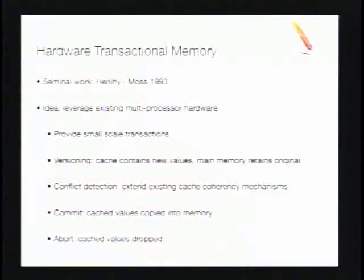The original idea of hardware transactional memory came up about 15 years ago. The idea was to leverage existing multiprocessor hardware mechanisms to give small-scale transactions, using caches for versioning — the cache contains new values and main memory retains the original. For conflict detection, existing cache coherency mechanisms are extended. On commit, cached values are committed to main memory; on abort, the cache values are simply dropped.